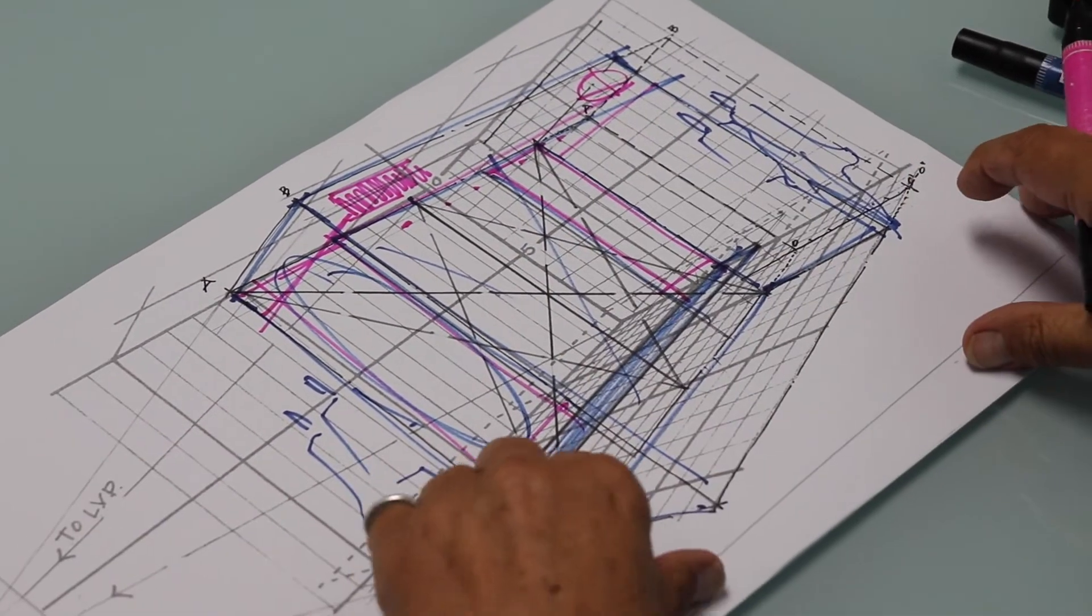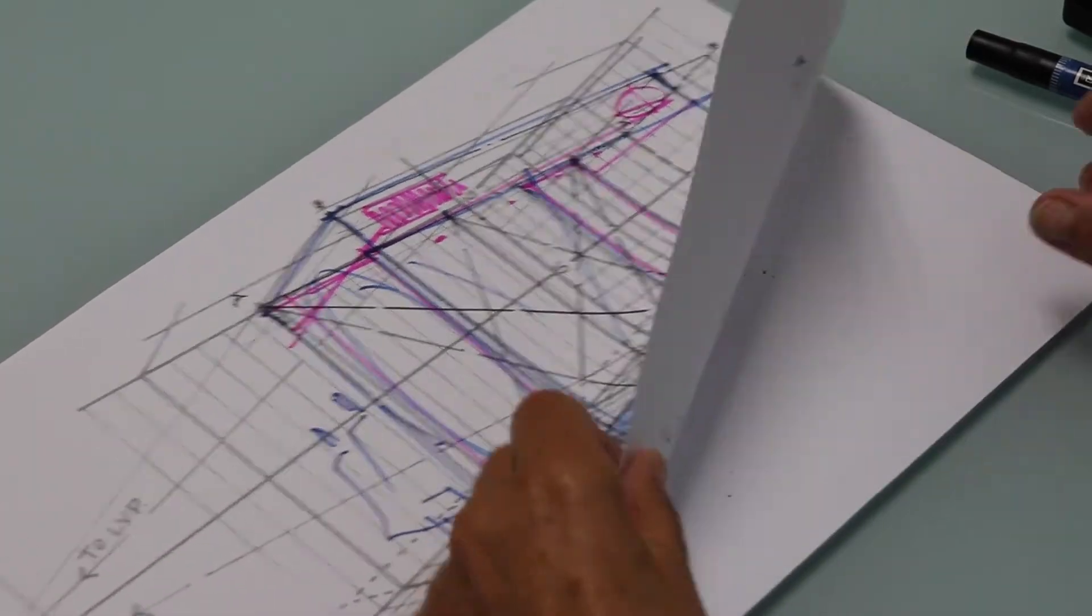So this is the mechanical way of drawing in perspective. Another option would be to do it freehand. So you start off like this, you have two vanishing points, bang, bang, like this, like this.